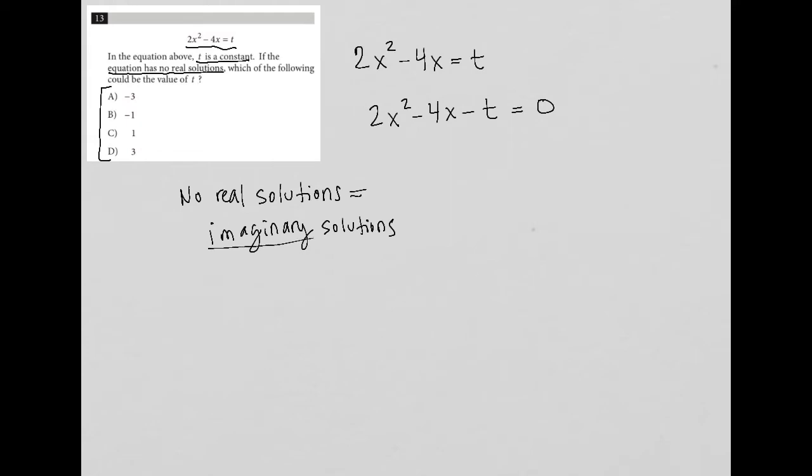So then hopefully this also rings a bell. But how do I get an imaginary solution from a quadratic equation? Well, the easiest way to figure that out, in my opinion, is through the quadratic formula. If you remember x equals negative b plus or minus the square root of b squared minus 4ac all over 2a.